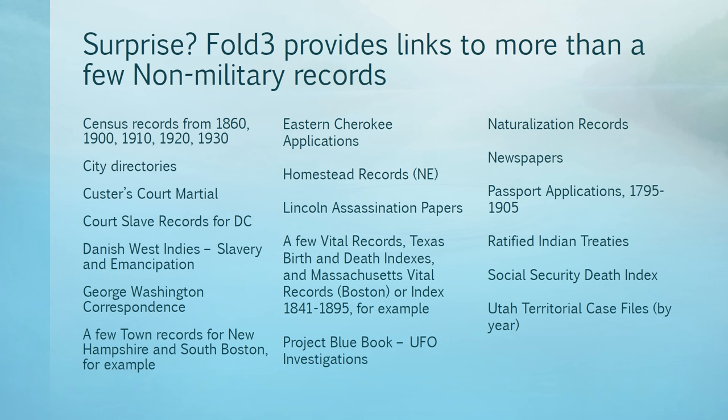Fold3 also provides links to more than a few non-military records. Census records from 1860 to 1930 are there. Many city directories are available. You can also access the homestead records for Nebraska. A few vital records are also included — Texas birth-death indexes, for example, and Massachusetts vital records for Boston. There's also Project Blue Book UFO investigation records. Naturalization records are available as well.